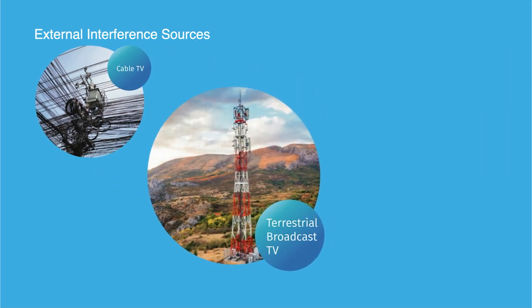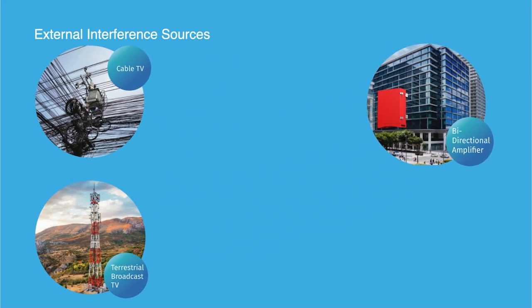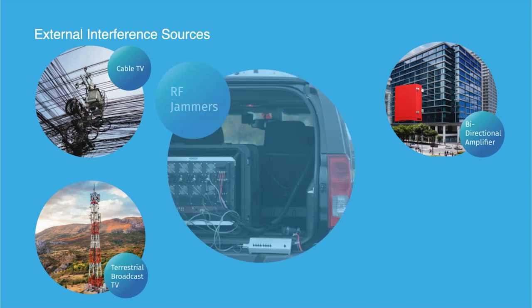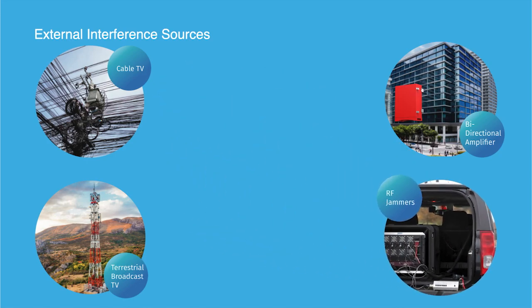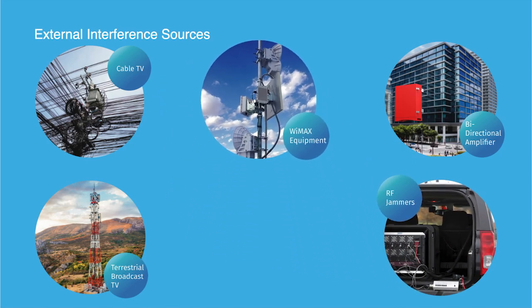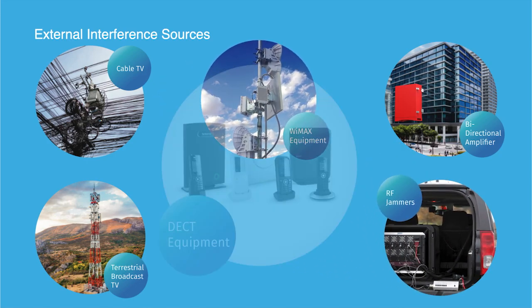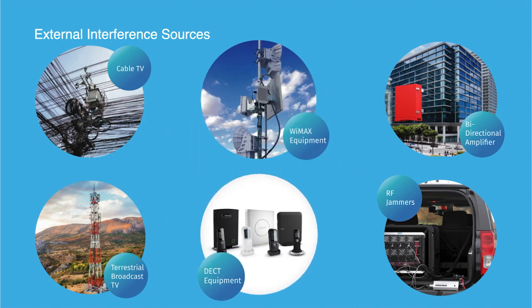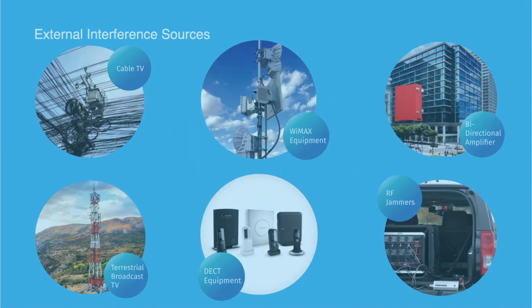Some of the most common sources of external RF interference include cable TV egress, broadcast TV, bi-directional amplifiers, RF jammers, legacy equipment such as WiMAX, and gray market devices such as decked equipment.